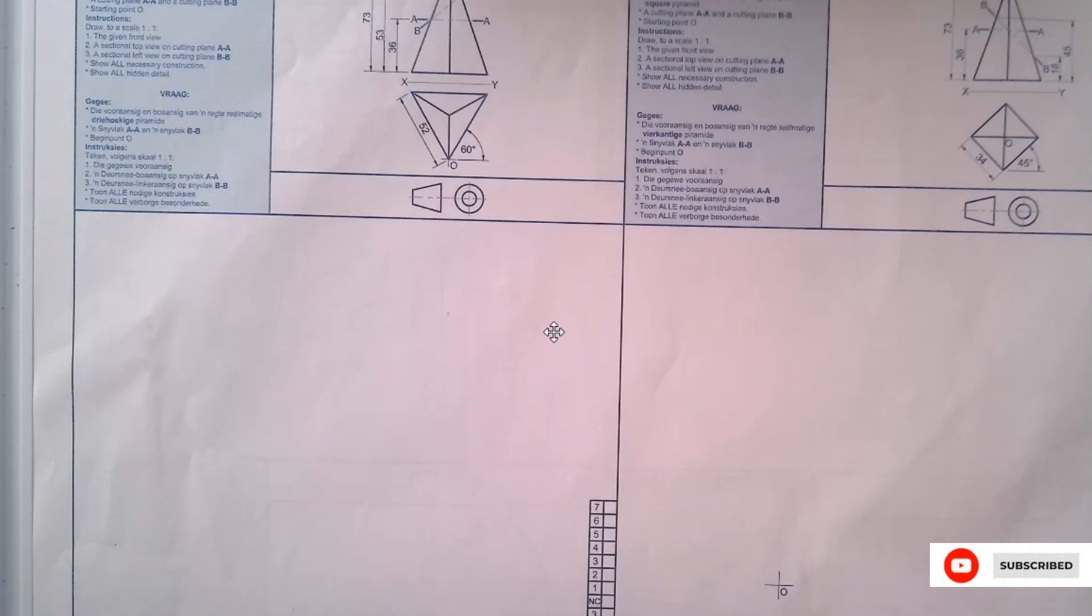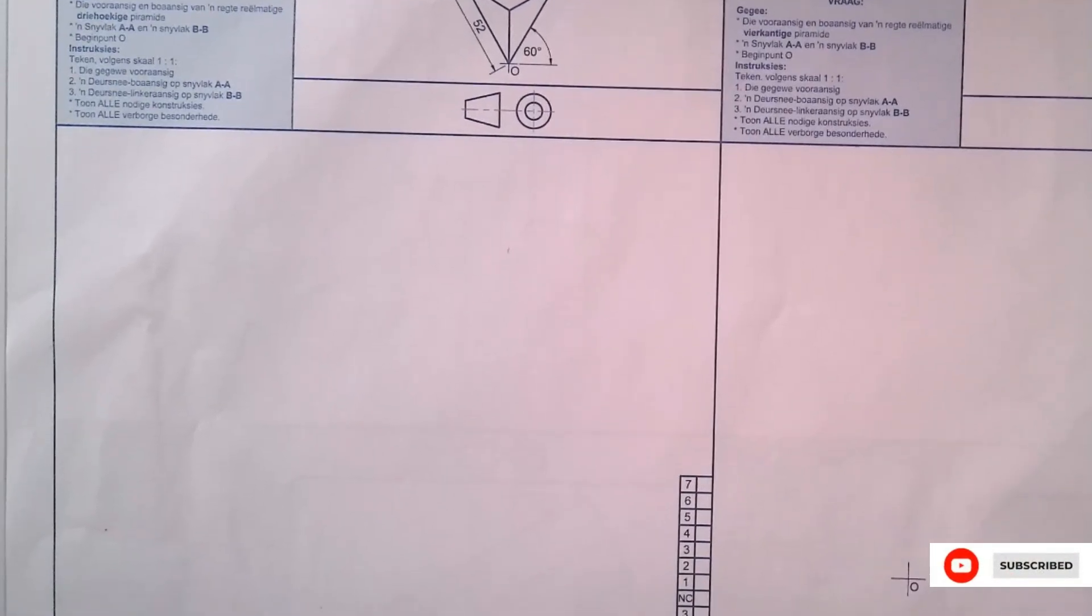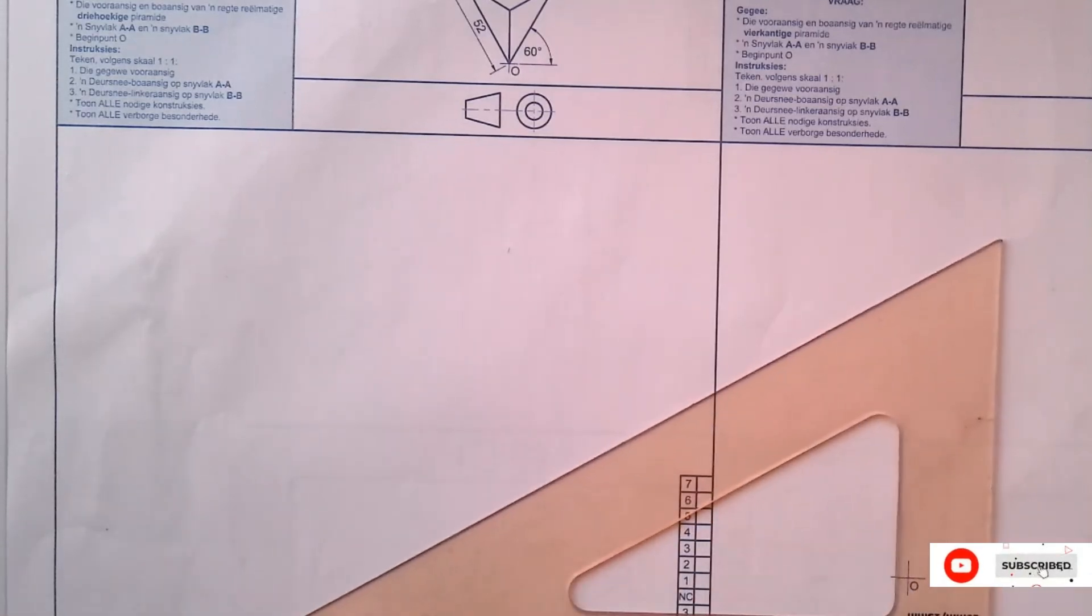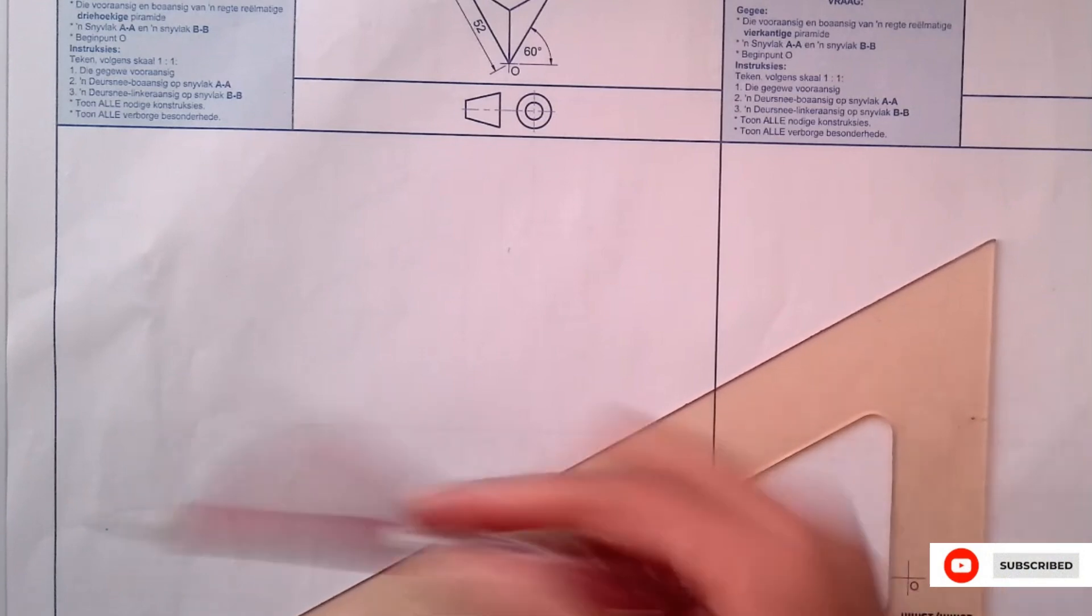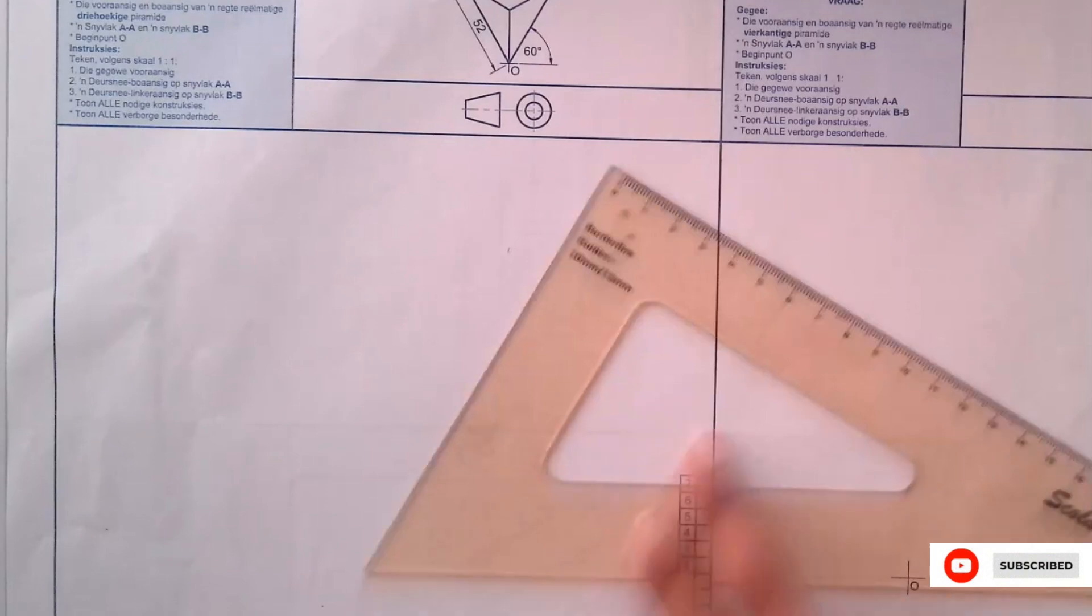I'm going to start my drawing. I'm just going to copy what is given in the question. For drawing a sectional view, the sectional top view, you have to ensure that you draw in construction so your top view is at 60 degrees.